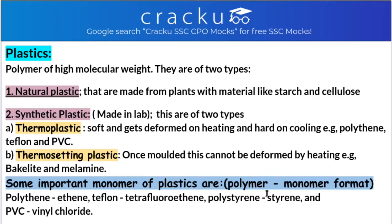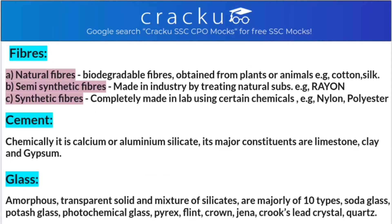The format is: polymer name first, then the monomer. The monomer of polythene is ethene. The monomer of Teflon is tetrafluoroethene. The monomer of polystyrene is styrene. Similarly, the monomer of PVC (polyvinyl chloride) is vinyl chloride.